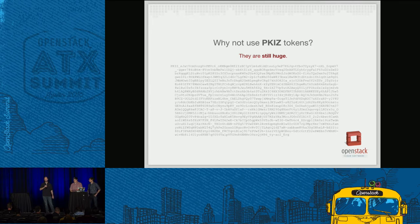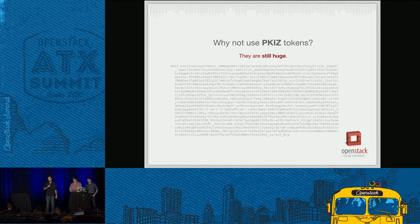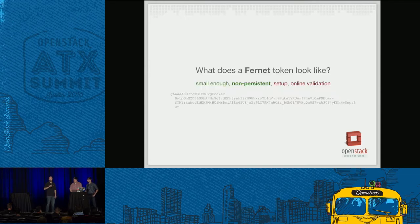So we tried to address that. We implemented PKI-Z tokens — as you can tell, this one's way smaller. They're almost exactly the same as PKI tokens, except we introduced a layer of compression in the pipeline. Catalogs are pretty compressible, so it kind of works out. But these are still far too big to be practical. You can't copy and paste them around in your CLI because they'll float past your screen.